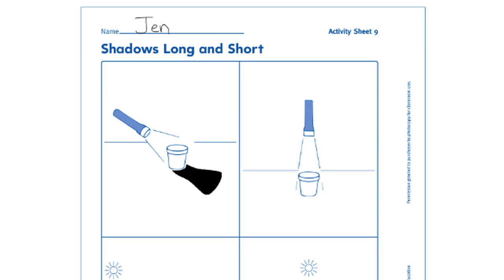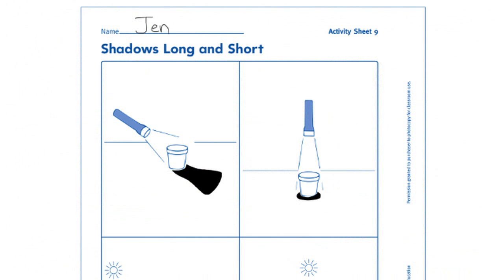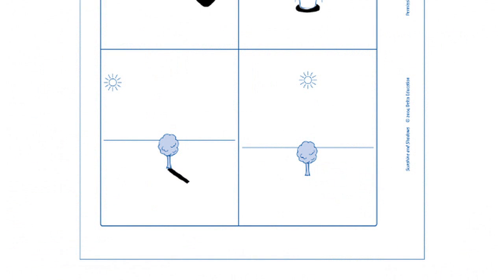You will probably need to help the students draw the shadows in the correct places. Remind students that the shadow falls opposite or directly across from the light source. Students should draw a long shadow for the first picture and a short shadow for the second picture. In the same way, have the students draw the shadows for the trees at the bottom of the page. They should draw a long shadow for the first picture and a short shadow for the second picture.